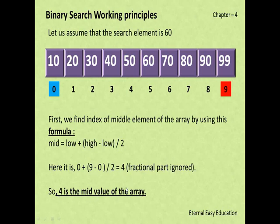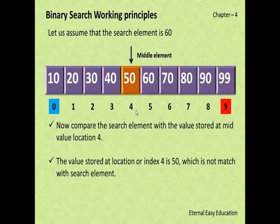The middle value of the given array is at index 4, so the lower point is 0 and the higher point is 9. The element at index 4 is 50. We compare 50 with the required element 60. The value stored at location 4 is 50, which does not match and is less than 60.